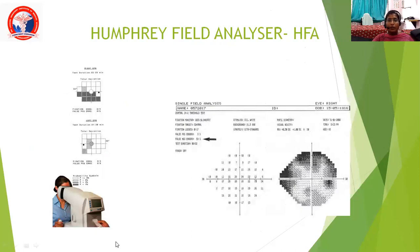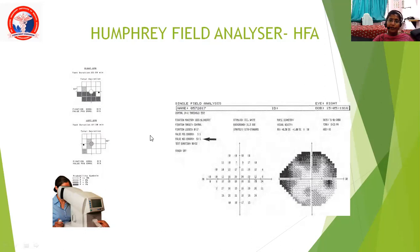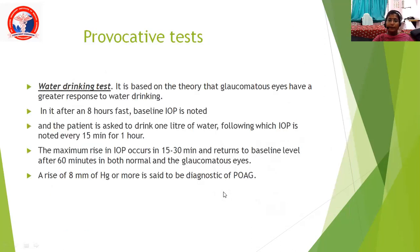As mentioned, the Bjerrum screen is an older method. Nowadays we use computerized charting — the Humphrey Field Analyzer or the Octopus Analyzer. The output shows field defects where black areas indicate areas of lost vision.